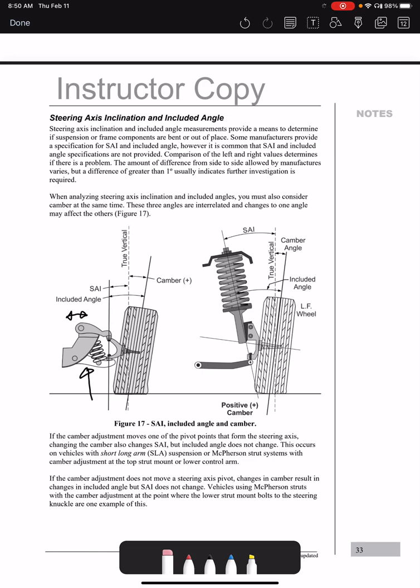So essentially, you start moving that upper control arm in order to adjust the camber. But because you're moving the camber and the SAI, if you move the camber more positive, then the SAI will also change. And the SAI will go more negative. But the interesting part here is your included angle should never change because it's the difference, again, between the SAI and the camber.